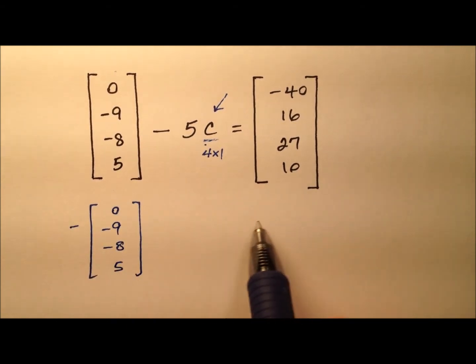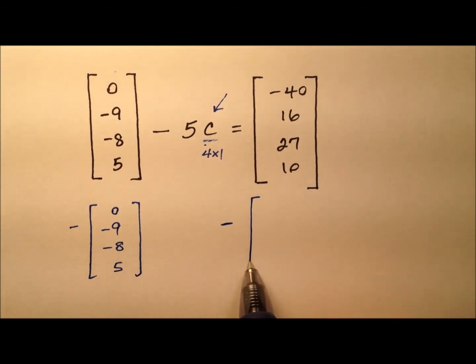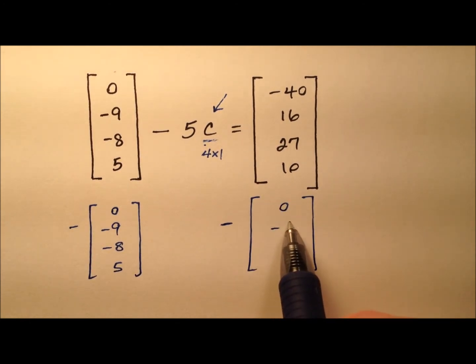Go ahead and write this out. Minus this column matrix: 0, negative 9, negative 8, and 5.